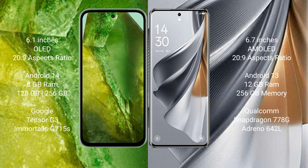Google Pixel 8a runs on the Android 14 operating system. It comes with 8GB RAM and 128GB or 256GB internal storage, a Tensor G3 processor, and Adreno 715 GPU.